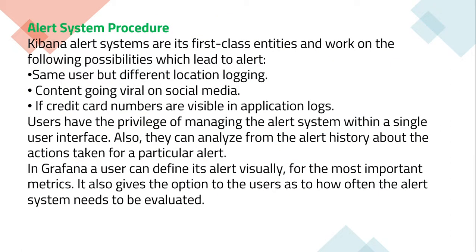In case of the Kibana alert system, alerts are first-class entities and work on the following possibilities: same user but different location logging, content going viral on social media, and if credit card numbers are visible in application logs. Users have the privilege of managing the alert system with a single user interface and can also analyze from alert history the actions taken for a particular alert.